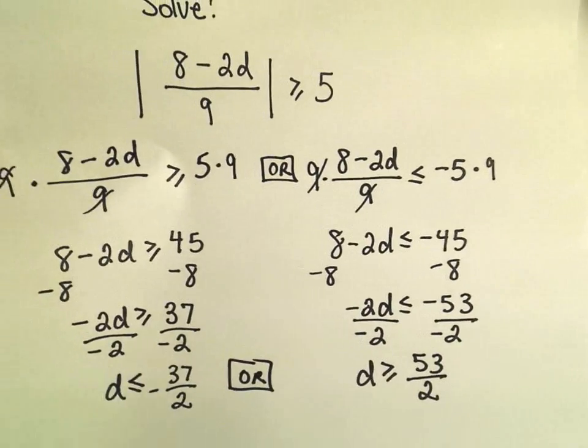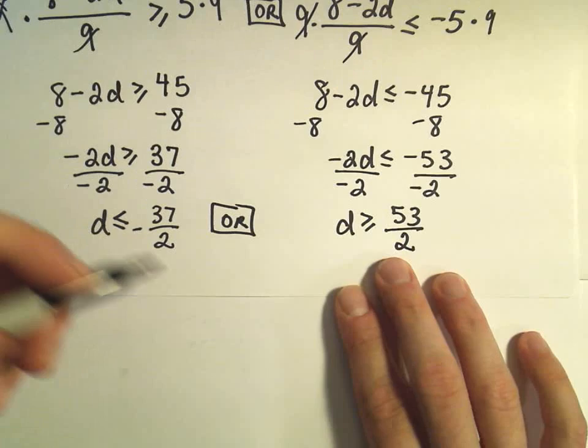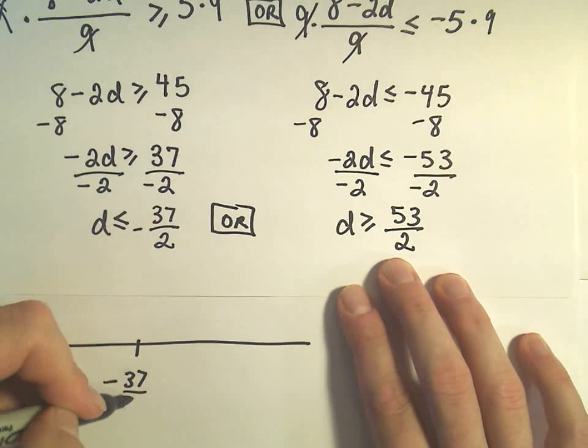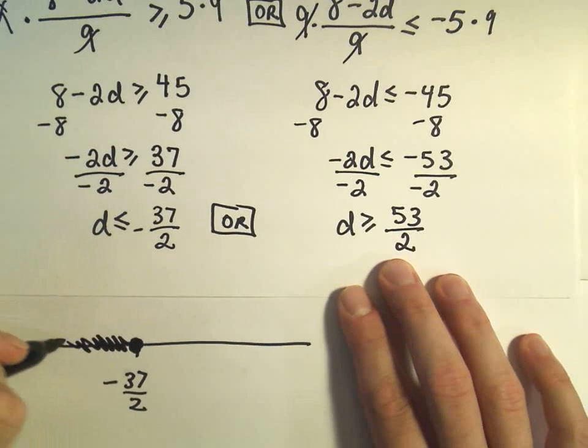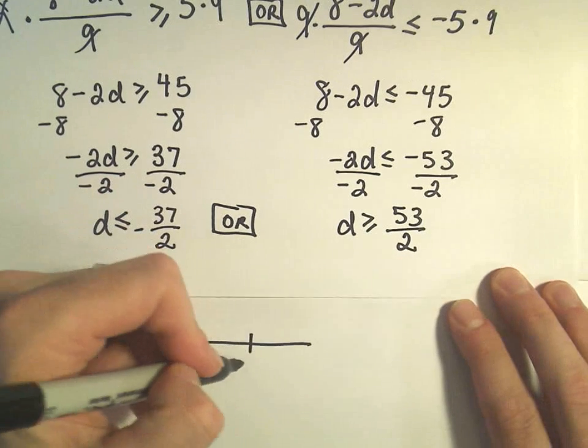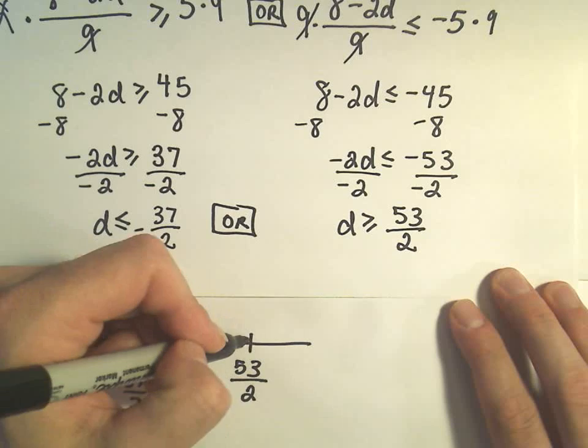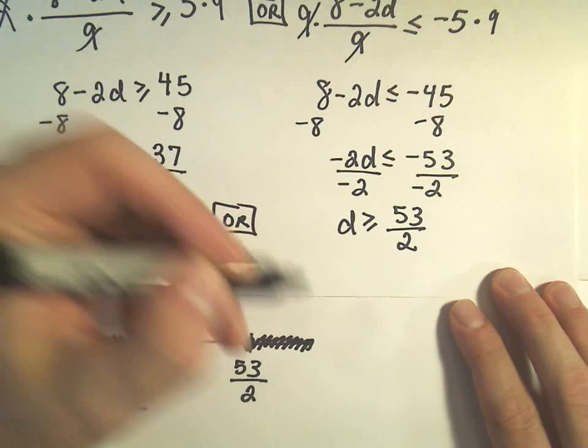So graphically, just to see it on a number line. Here's negative 37 over 2. It can be less than or equal to that. Or 53 over 2, that's positive. It can be greater than or equal to that.